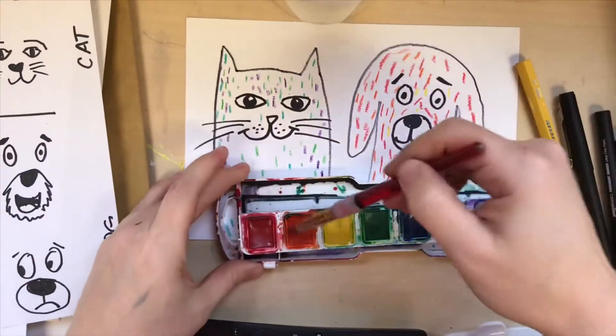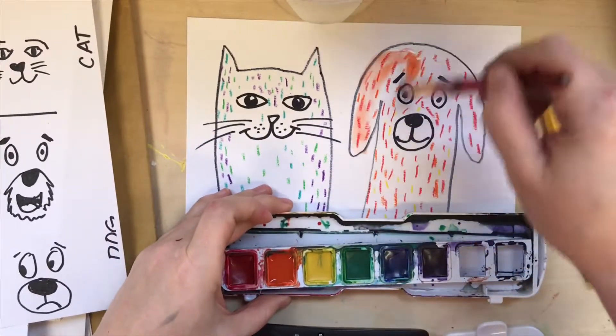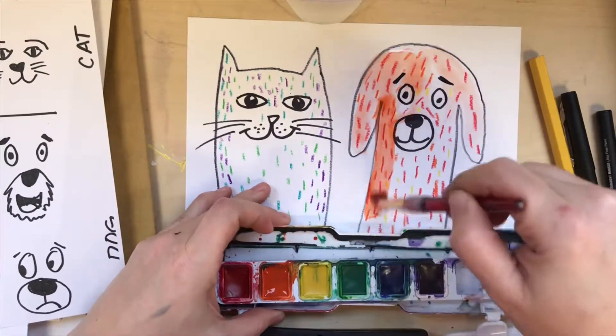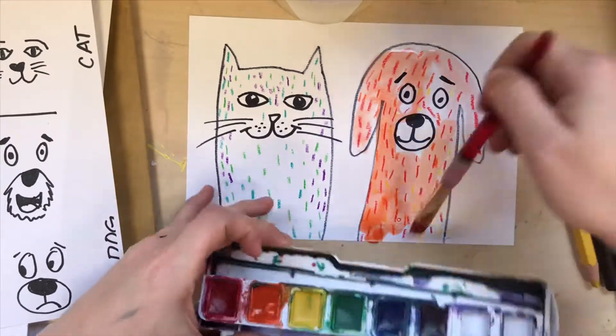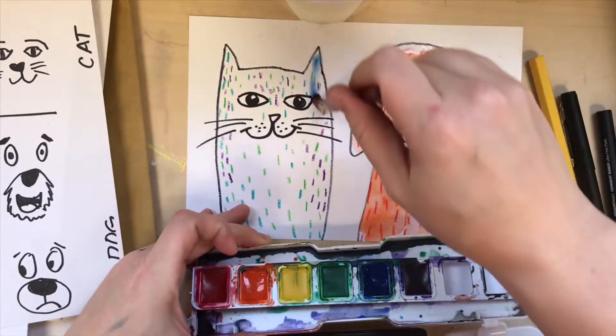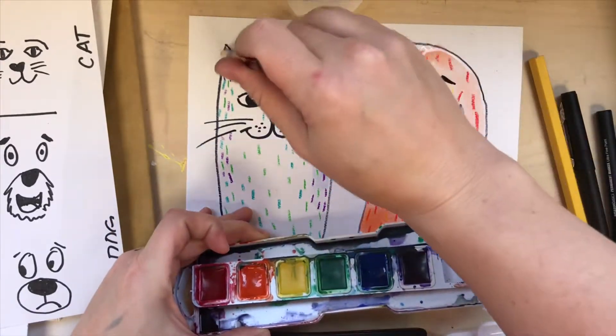And I added cool colors for my cat: green, blue, purple. Now look, you can use a watery brush slushed in a warm color to add a solid color to your dog.